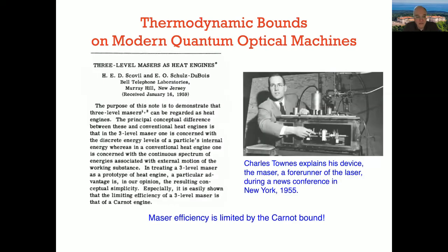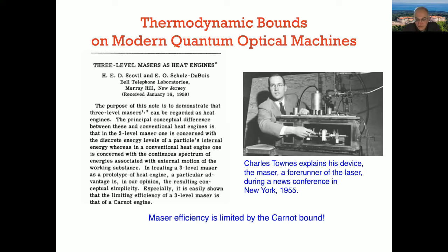A deeper example related to quantum optics: one of the paradigmatic devices in optics or photonics is the maser. People realized in the 1950s that you can map the operation of the laser to a heat engine and show that its operation is limited by the Carnot efficiency. So this is an example of how our modern machines can be limited by classical thermodynamical laws.